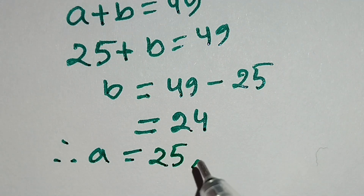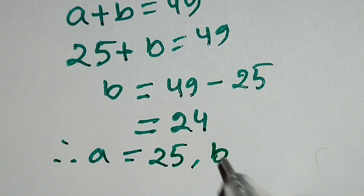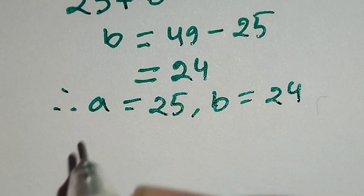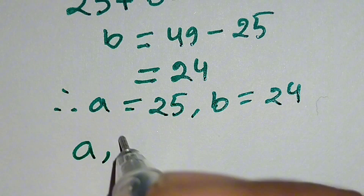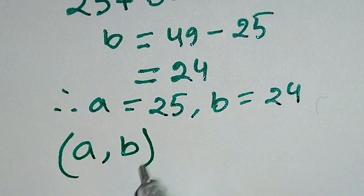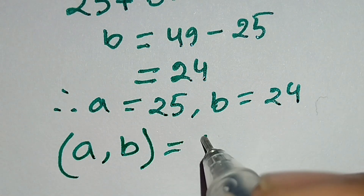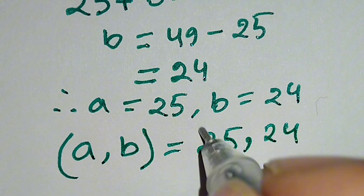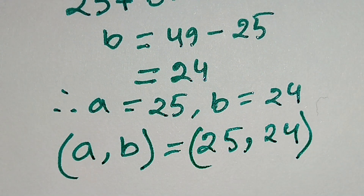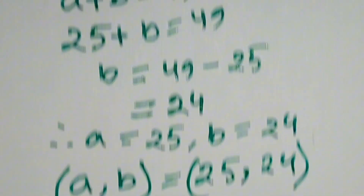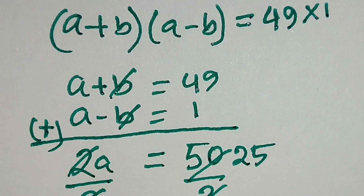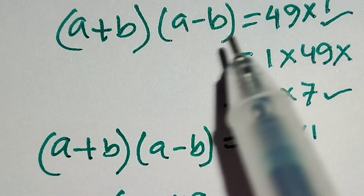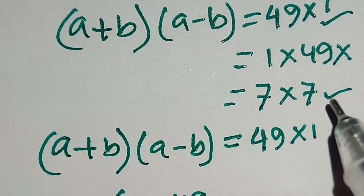So the first solution gives us a comma b equal to 25 comma 24. Now for the second case: a plus b times a minus b equals 7 times 7.